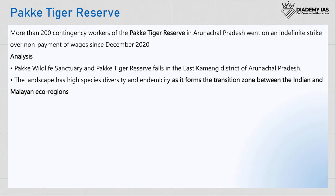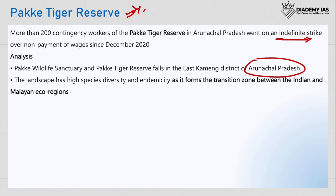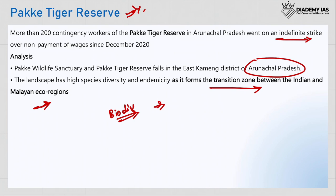The Pakke Tiger Reserve was in the news due to protests by workers over non-payment of wages. What is important from the exam perspective is its location and flora and fauna. Pakke Tiger Reserve is located in Arunachal Pradesh, East Kameng district. The Pakke Wildlife Sanctuary and Pakke Reserve fall under this. This landscape has very high diversity as it forms a transition zone between the India and Malay ecoregions — the Indo-Myanmar region is one of the biodiversity hotspots.